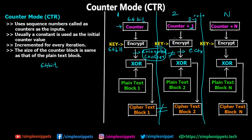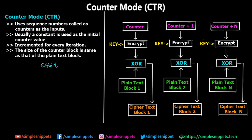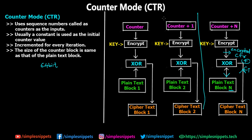For decryption, the process is exactly the opposite. At the receiver's end, the receiver has the same counter value. They encrypt the counter using the key, then perform an XOR operation with the ciphertext. Reversing the arrows: the XOR happens between the encrypted counter and the ciphertext, and the result is the plaintext block. This same process is repeated for all blocks — XOR of encrypted counter with each ciphertext block — to recover the plaintext.